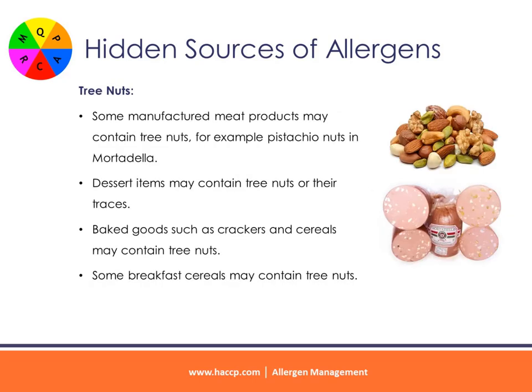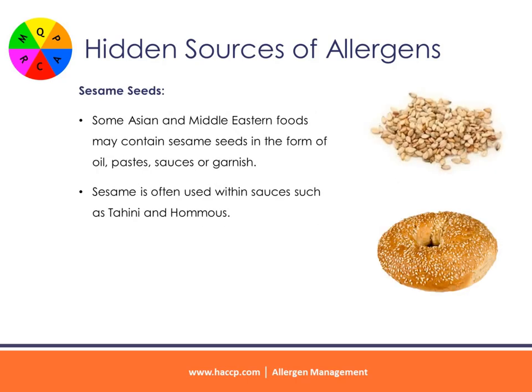Tree nuts: some manufactured meat products may contain tree nuts — for example, pistachio nuts in mortadella. Dessert items may contain tree nuts or traces of tree nuts. Baked goods such as crackers and cereals may contain tree nuts. Some breakfast cereals may also contain tree nuts.